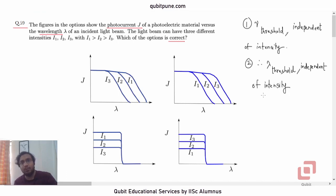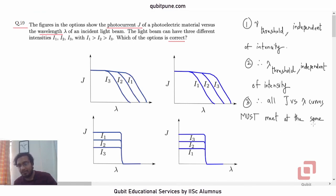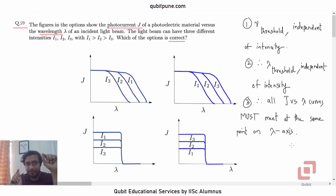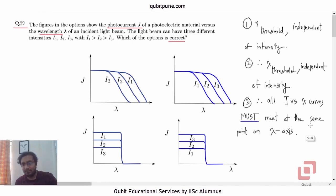Considering these two points, we must say that all J versus lambda curves must meet at the same point on the lambda axis. Because if the wavelength crosses that point, frequency falls below the threshold, so there is no photoelectric effect and no photocurrent.